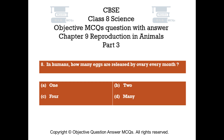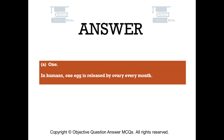Question number 8. In humans, how many eggs are released by the ovary every month? Option A: One. Option B: Two. Option C: Four. Option D: Many. The right answer is option A — One. In humans, one egg is released by the ovary every month.